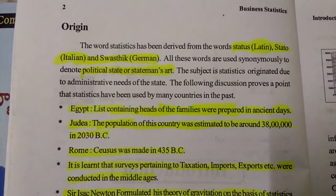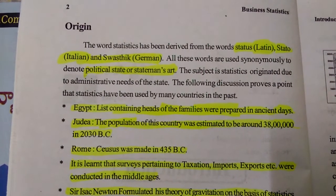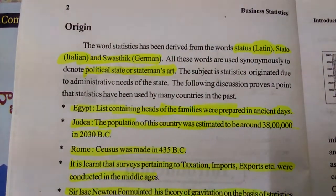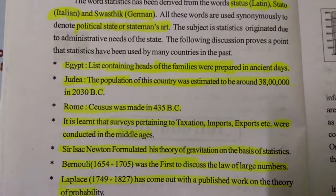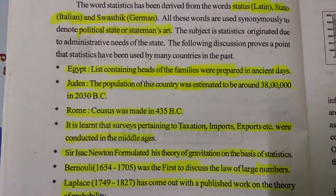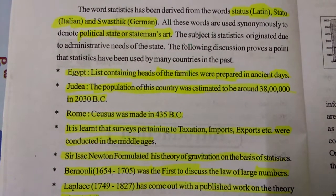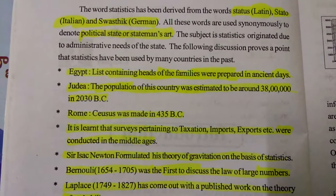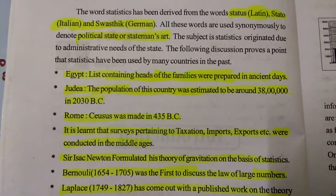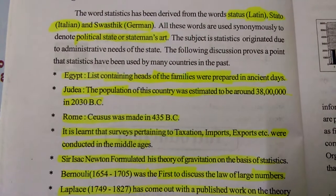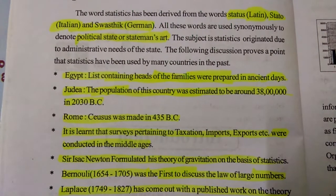Statistics was first used in various countries. In ancient Egypt, lists containing heads of families were prepared, and the population of the country was estimated to be around 38 lakhs in 2030 B.C.